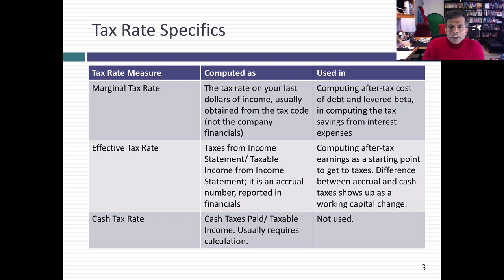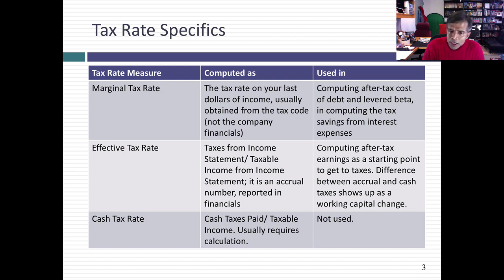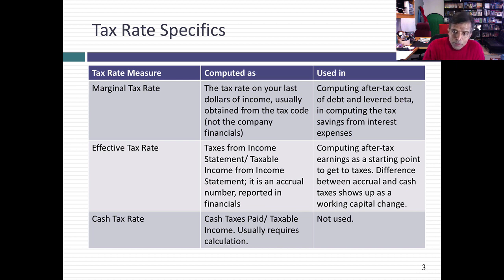The marginal tax rate is the tax rate you use when you compute the tax benefits from debt. Interest expenses on debt save you taxes at the margin. If you have $1,000 in income and $200 in interest expenses, I allow you to offset your income and report taxable income of $800. In effect, you save taxes on the very last $200 of income. So to compute your after-tax cost of debt, the tax rate you should be using is a marginal tax rate.